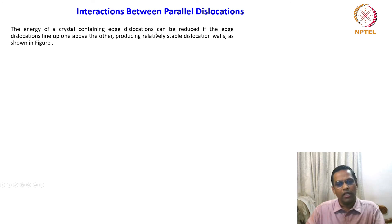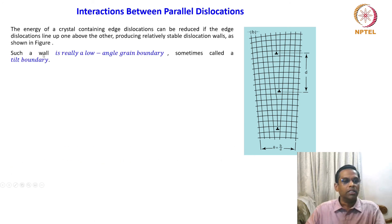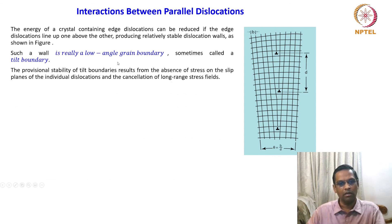The energy of the crystal containing edge dislocations can be reduced if the edge dislocations line up one above the other, producing a relatively stable dislocation wall as shown. We have already seen this yesterday, but this is a schematic depicted in most physical metallurgy textbooks. The formation of a low angle grain boundary is shown like this, and you will see that burger's vector and the theta is b by d. The distance between the two edge dislocations in the vertical axis is d. Such a wall is really a small angle grain boundary, sometimes called tilt boundary. Another name for this is tilt boundary.